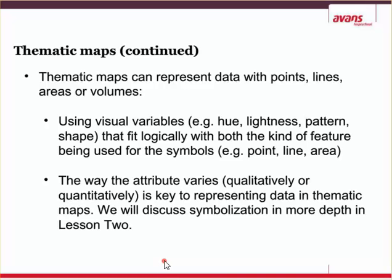Thematic maps can represent data by color, but also by points, lines, areas, and volumes. They can use hue (color), lightness — called chiaroscuro — and patterns or shapes. If you make a measurement on a river, you can put a point on the river showing phosphorus levels by making the point red or bigger, or even using a pie chart to show percentage compositions. They can be qualitative — is the river clean or not — or quantitative, showing measured levels such as phosphorus concentration.